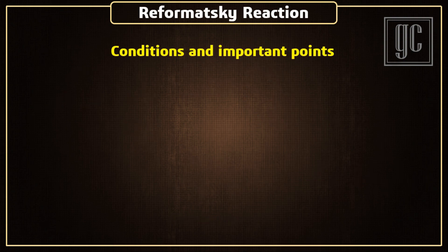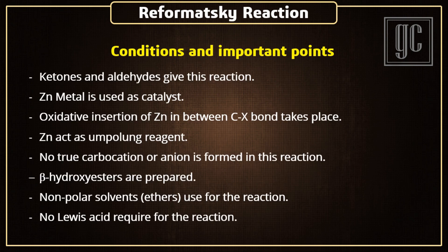The conditions and important points of the reaction: Ketones and aldehydes give this reaction. Zinc metal is used as catalyst in the reaction. Oxidative insertion of zinc in between the carbon and halogen bond takes place. Zinc acts as an umbilung reagent. No true carbocation or anion is formed in this reaction; only rearrangement of sigma and pi electrons takes place. Beta-hydroxy esters are prepared. Non-polar solvents such as ethers are used for the reaction. No Lewis acid is required for the reaction.